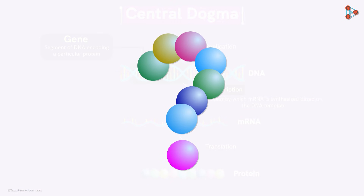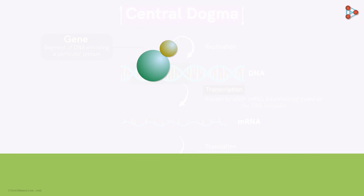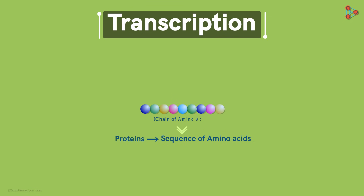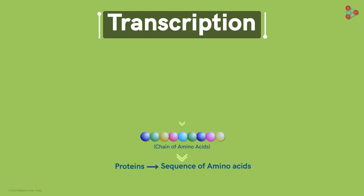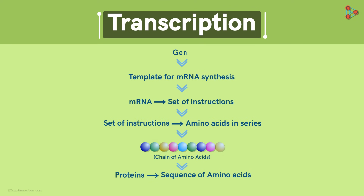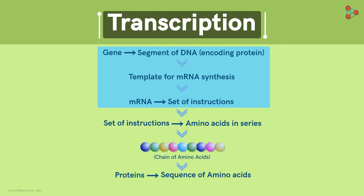So how are proteins made from the sequence of base pairs in the gene? Proteins are a specific sequence of amino acids — the various amino acids come together in a specific series to form a chain that makes up the proteins. Now to get the amino acids in a series, we need a set of instructions. These are present in the form of mRNA, which is synthesized from a special template — the gene. So a segment of the DNA that encodes for protein is copied first, and the copy is in the form of mRNA. This process of making mRNA is called transcription.